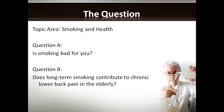Question B highlights the importance of a clear, well-articulated question — it's quite specific and doesn't leave a whole lot of room for confusion. As we can see with Question B, we automatically identify the independent and dependent variables: the independent variable being the long-term smoking, the dependent variable being the chronic lower back pain, and the population we're studying, which is the elderly. This is a good example of a well-phrased question that's specific, to the point, and easy to study.